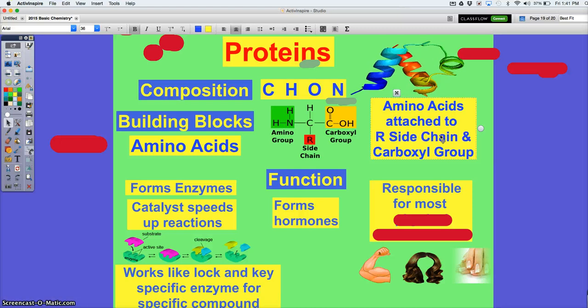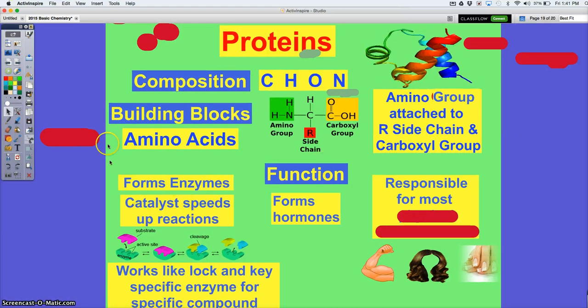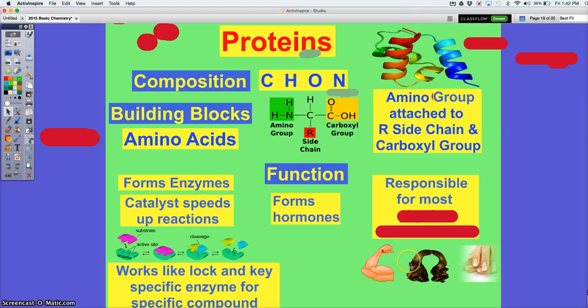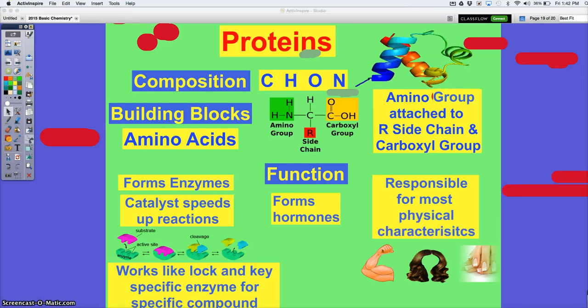Now proteins form enzymes and hormones, and I'm going to talk about enzymes in a minute, but they're also responsible for these things in living organisms. What are they? Hair, nails - what do we call muscles, hair, nails, your skin? Yes, their appearance or their physical characteristics. Proteins are a direct result of that.